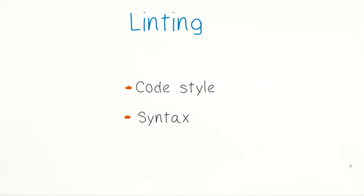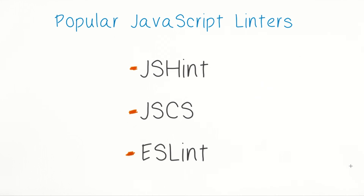Now that you're familiar with the concept of linting, let's talk solutions. There are three popular JavaScript linters out there that developers use: JSHint, JSCS, and ESLint. You'll find a link in the notes that details the differences, but to cut it short, we'll stick with ESLint as it supports modern ES6 code, can be extended, and has output that's really easy to understand.